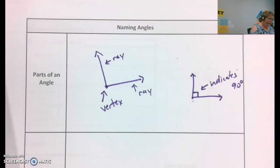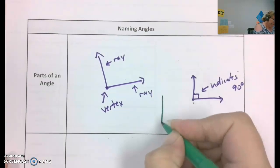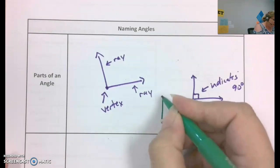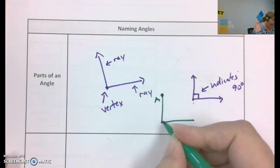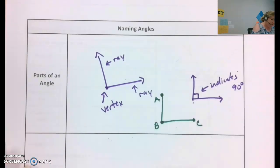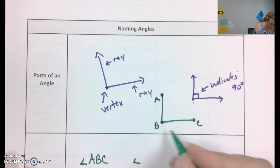I think we may also want to put that this indicates 90 degrees. When we name angles, there's lots of ways we can name them. We'll use this one here. This is a, b, c. So, I can name this angle ABC.